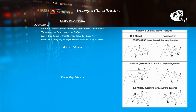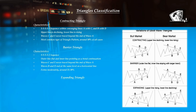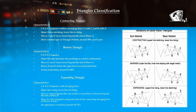Contracting triangle characteristics: 3-3-3-3-3 sequence with converging lines A with C and B with D. Upper line is declining, lower line is rising. Waves C and E never travel beyond the end of wave A. Most common type of triangle pattern, around 50% of all cases. Barrier triangle characteristics: 3-3-3-3-3 sequence with outer line flat and inner line pointing as a trend continuation. Waves C and E never travel beyond the end of wave A. Waves B and D end at the same level on a horizontal line. Forms moderately, around 25 to 30% of cases.